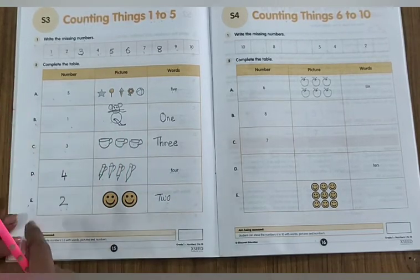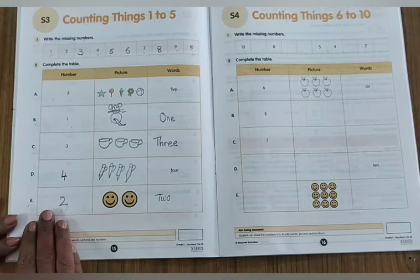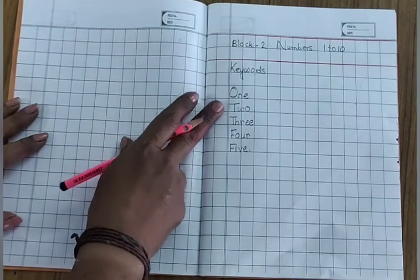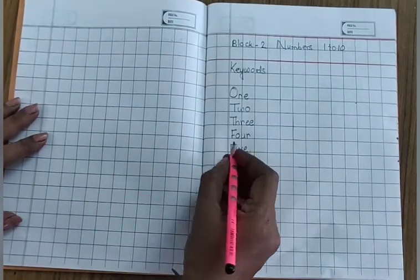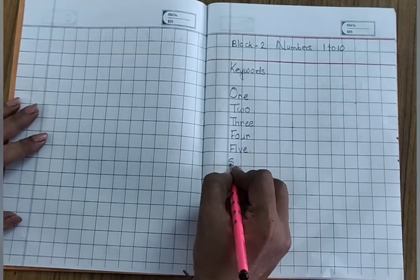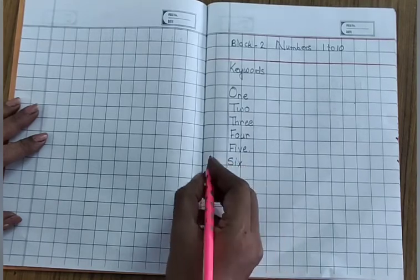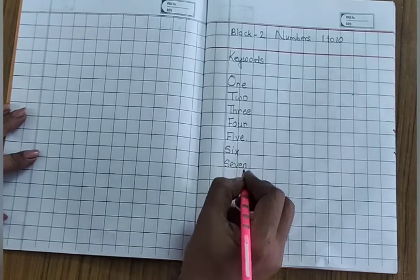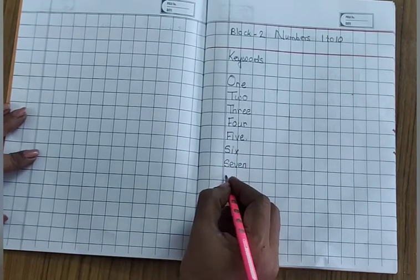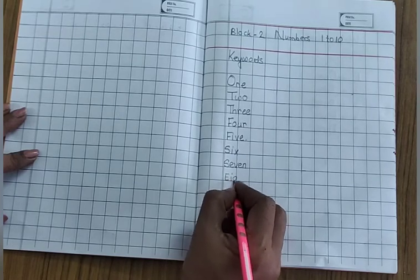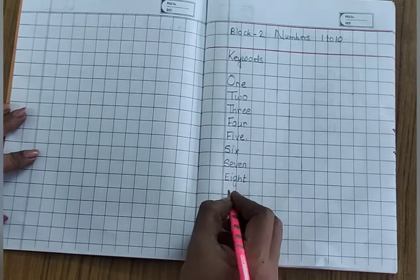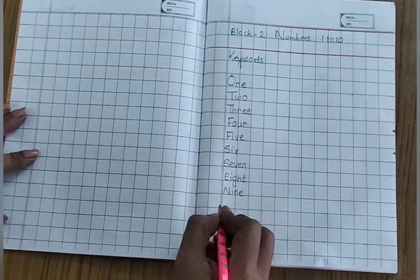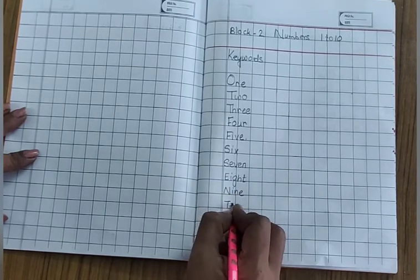We completed our table. Now open your classwork, children. See the keywords — we wrote till five. So we have to write six: S-I-X. Then S-E-V-E-N, seven. E-I-G-H-T, eight. N-I-N-E, nine. T-E-N, ten. We completed our keywords.